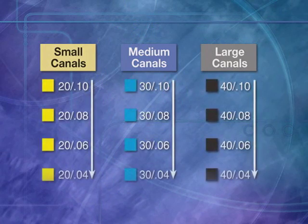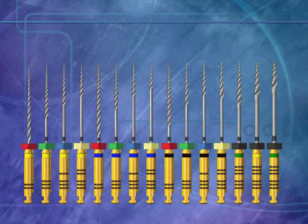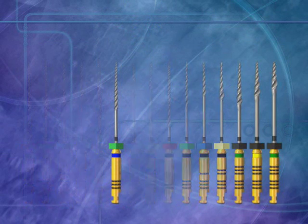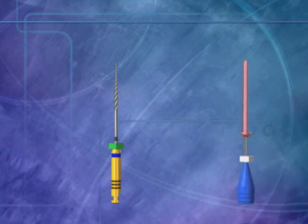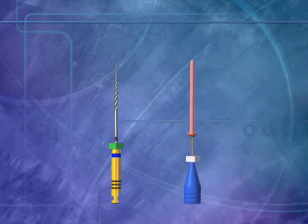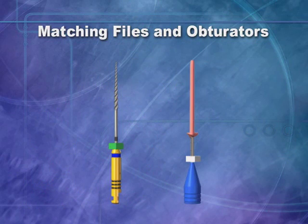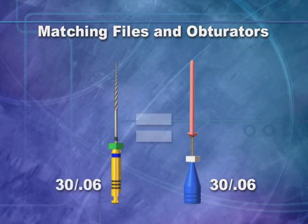Up to four GT files will then be used in a crowned-down fashion to instrument the canal. The system features 15 GT files and 15 matching obturators. The largest GT file taken to length will dictate which size GT obturator to use in that canal. Matching the obturator with the largest file taken to length completes the ProSystem GT method of root canal therapy.